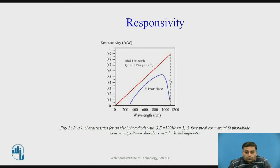Figure 2 shows the characteristics graph of responsivity versus wavelength. The unit of responsivity is ampere per watt, as it is the ratio of photocurrent to incident optical power. The straight line represents an ideal photodiode with quantum efficiency of 100%, while the curve represents a commercially available silicon photodiode. The responsivity suddenly drops to zero after a specific wavelength, which is referred to as the long wavelength cutoff.